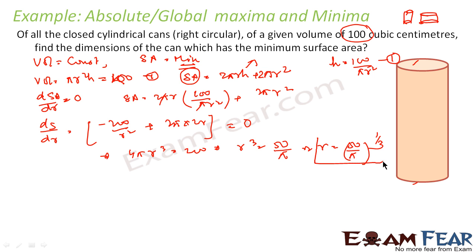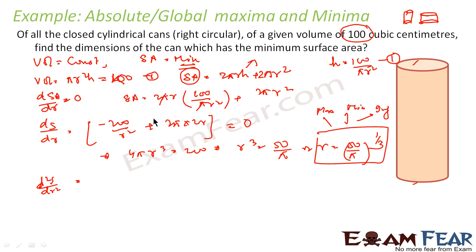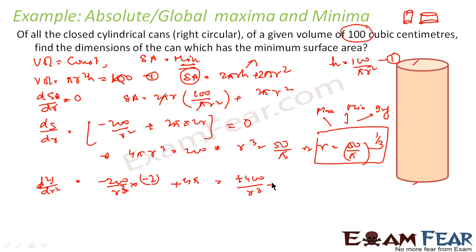I have a value of r, but I need to confirm whether this is a maximum, minimum, or inflection point. So I find d²S/dr². Differentiating dS/dr gives 400/r³ + 4π. This is always greater than zero because r is always greater than zero as it is a dimension. Since the second derivative is greater than zero, this confirms it is a minimum value.